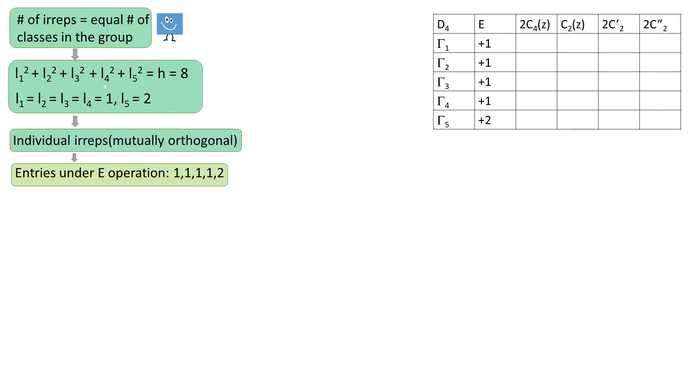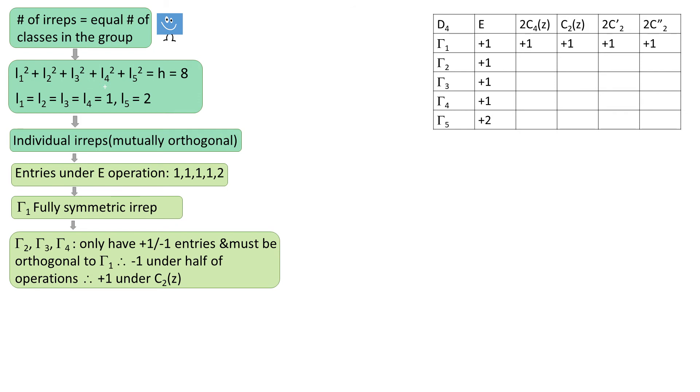The next step is to find out the individual EREPs. Again, the first EREP is the fully symmetric EREP. Then let's tackle the three one-dimensional EREPs. They have to be orthogonal to tau1, therefore they have to have minus 1 under 4 operations.